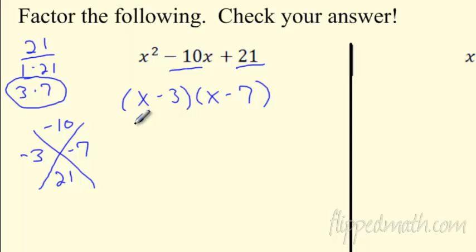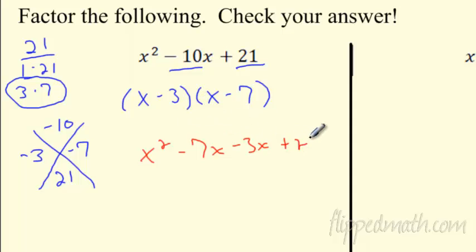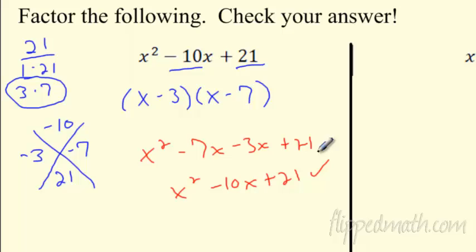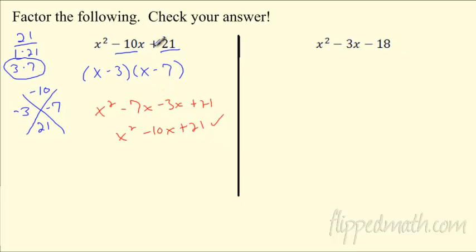Let's check it: x times x is x², x times negative 7 is negative 7x, negative 3x, then plus 21. Put those together and there it is — it works. What's nice is you're going to know if you got it right. All you have to do is multiply it back out. You should get 100% on every quiz and every test — just multiply it out.